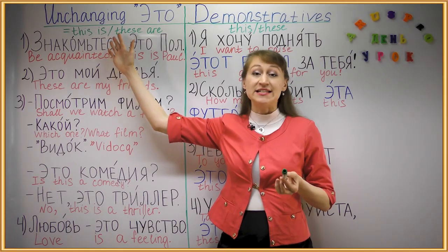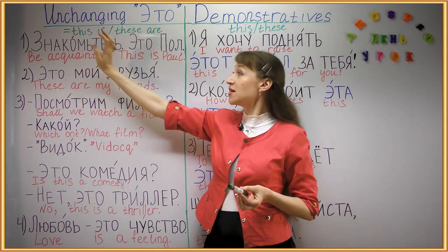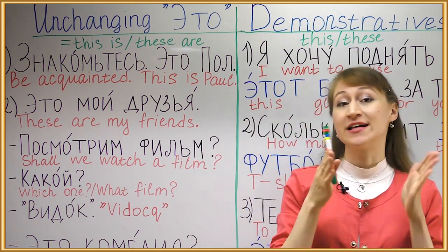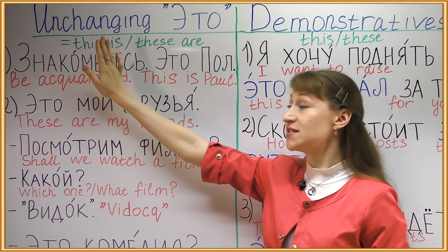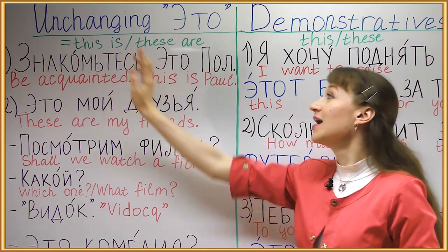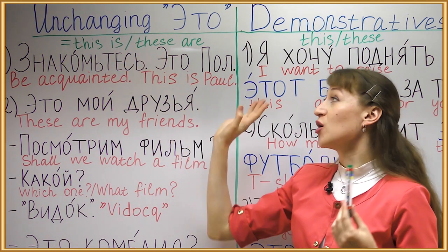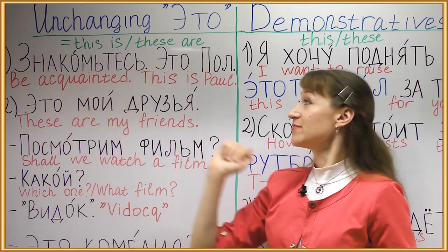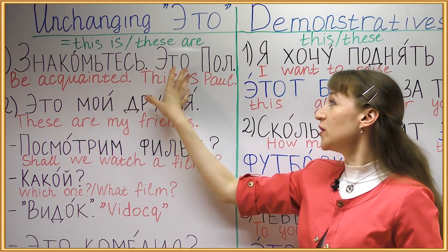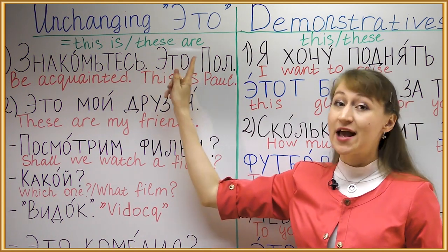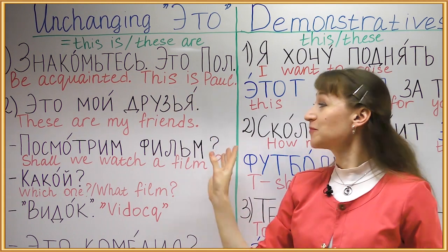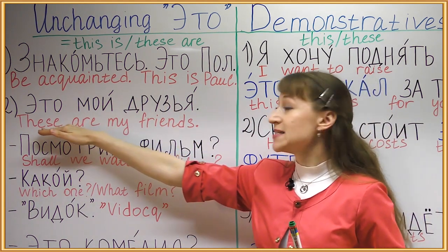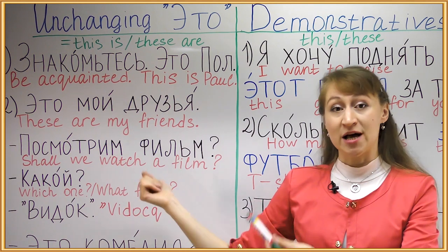Unchanging это is translated into English as two words: 'this is' or 'these are,' whereas demonstrative pronouns are translated only as 'this' or 'these.' We use the unchanging это for introduction or definition of something. For example, знакомьтесь, это Пол — 'this is Paul.' Это мои друзья — here the noun is plural, so in English we say 'these are my friends,' but in Russian it's still just это.